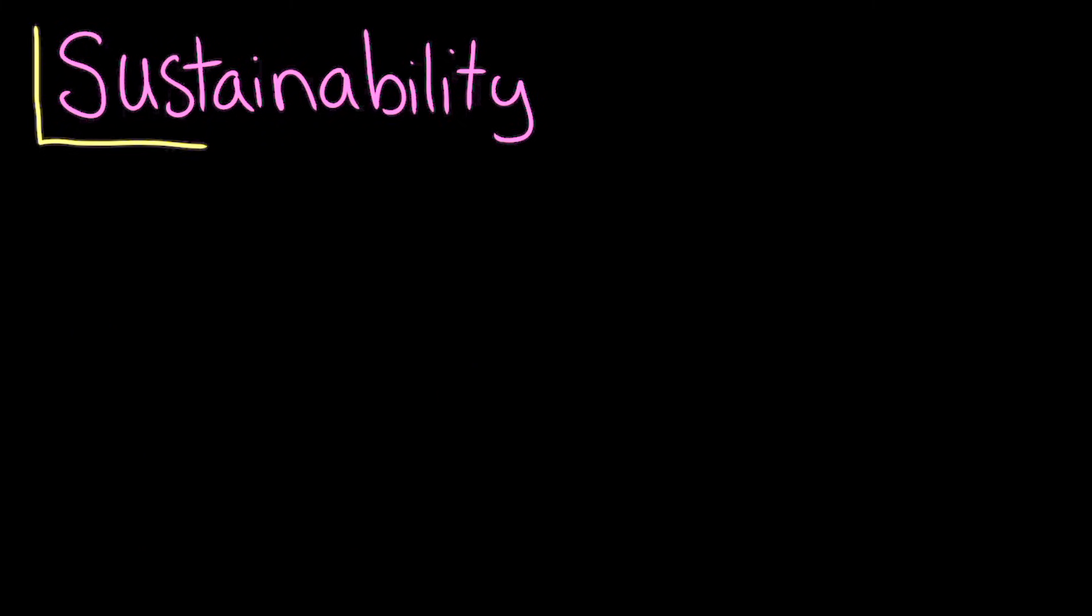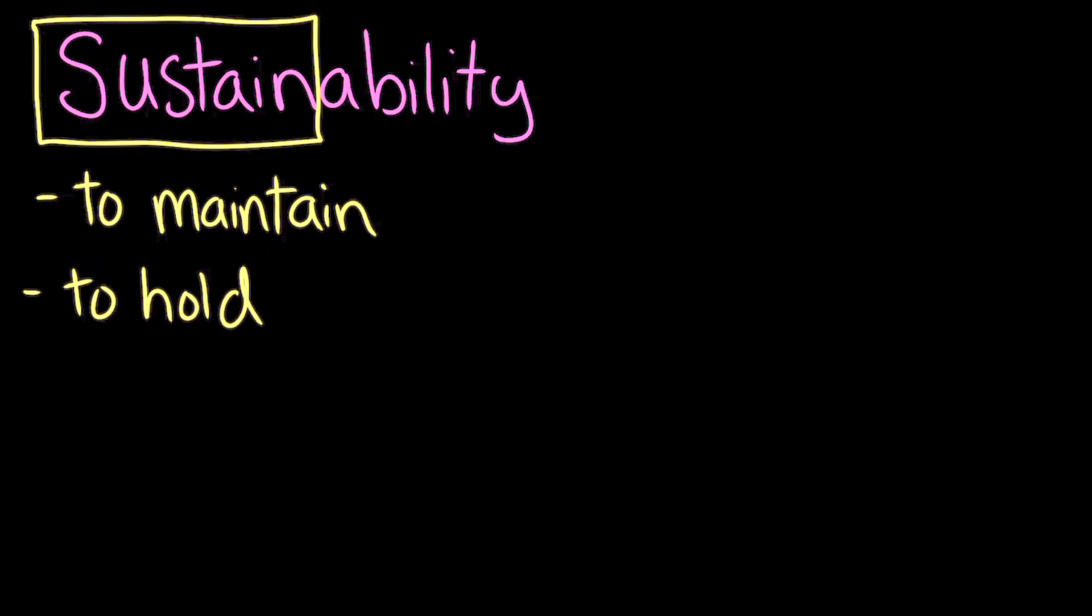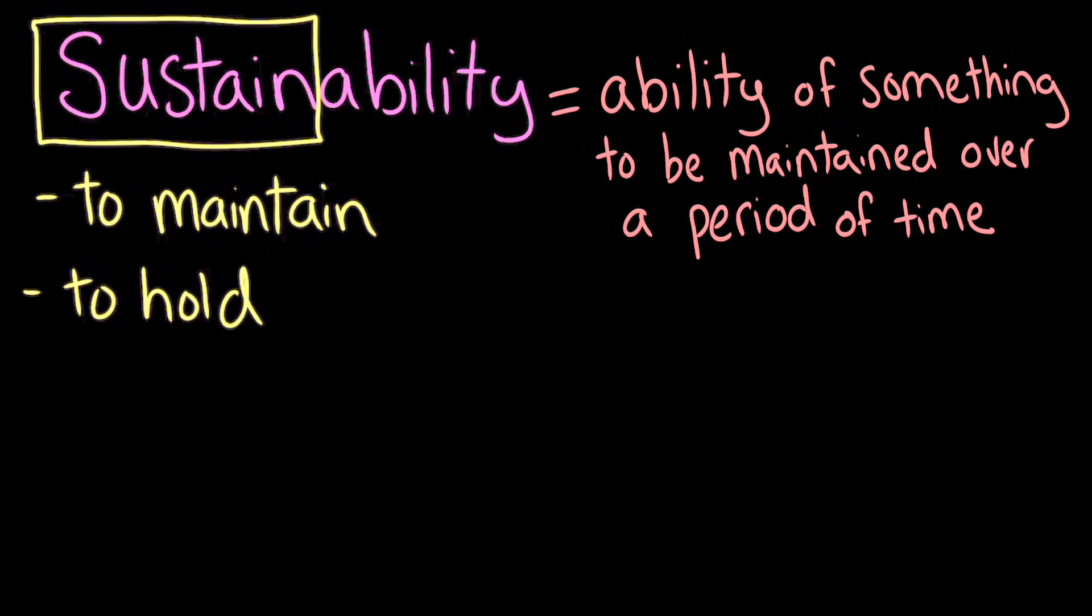Well, the word sustain means to maintain or to hold. So sustainability is the ability of something to be maintained over a period of time. In environmental science, when we talk about sustainability, we're talking about the ability of the earth's systems to survive and adapt to changing environmental conditions and maintain the health of ecosystems.